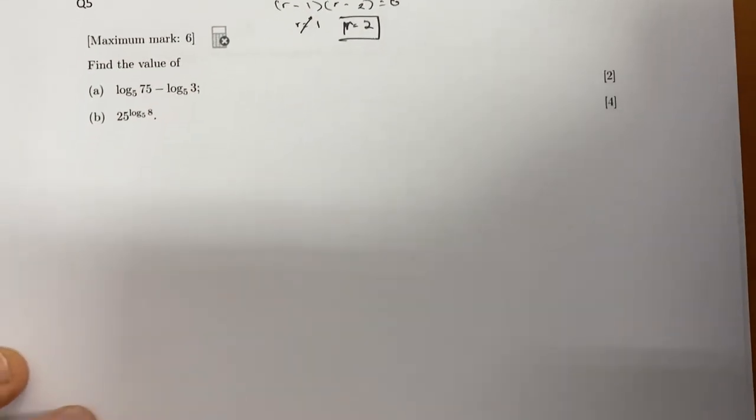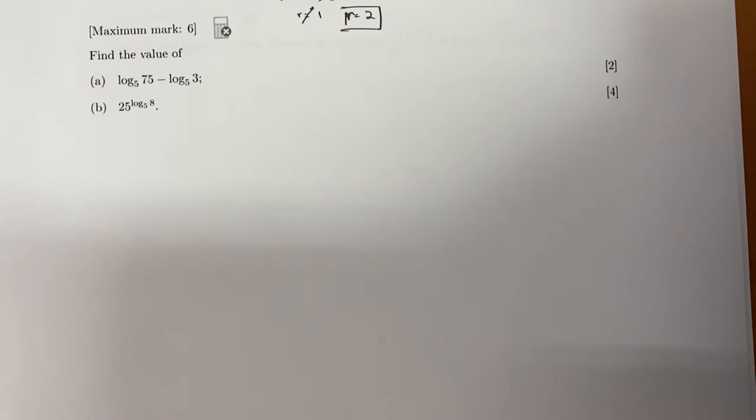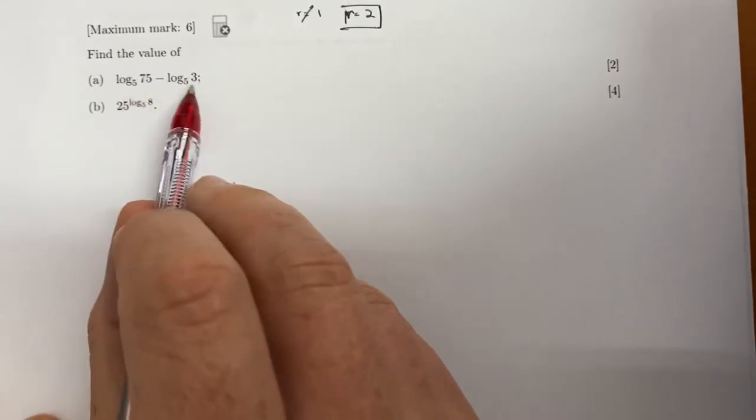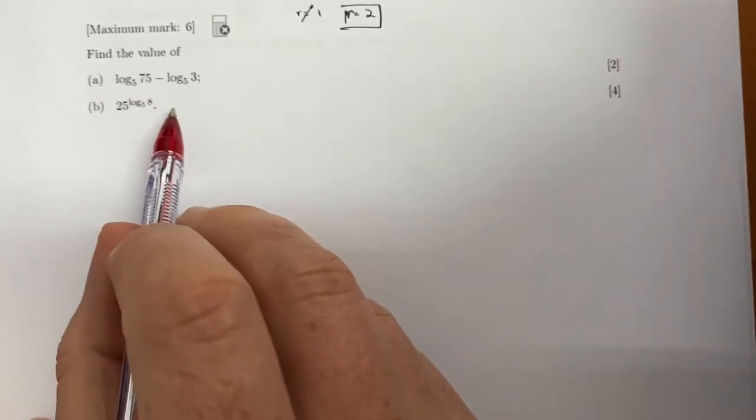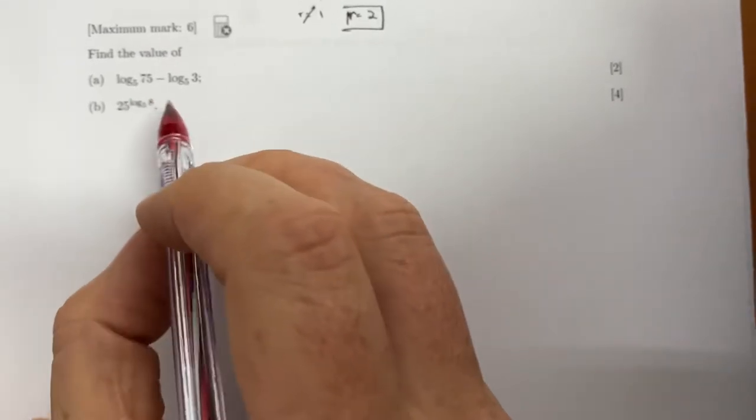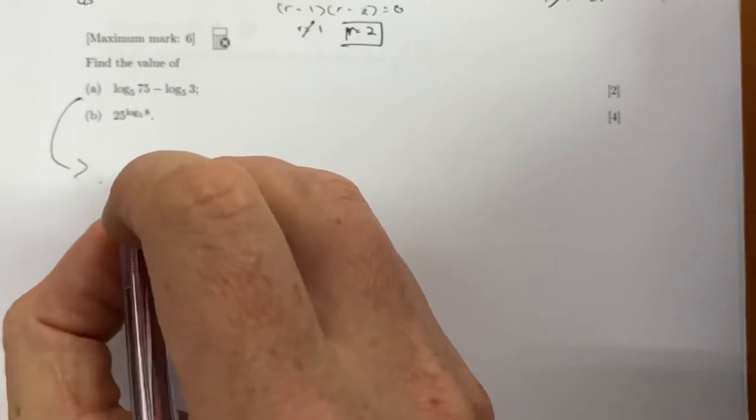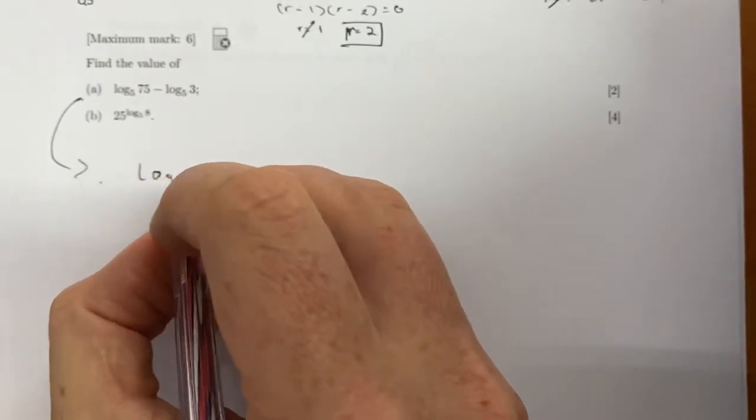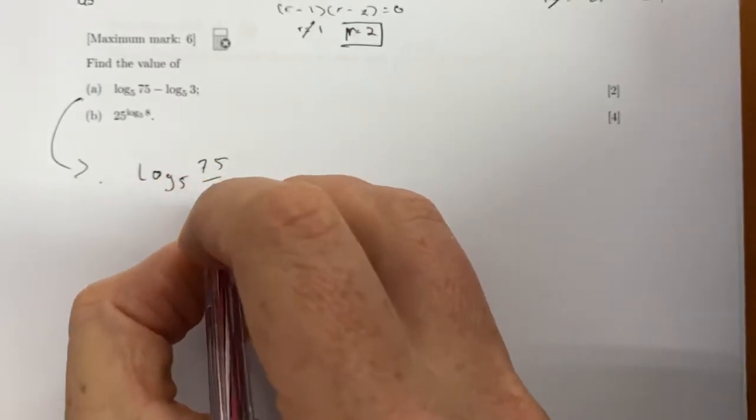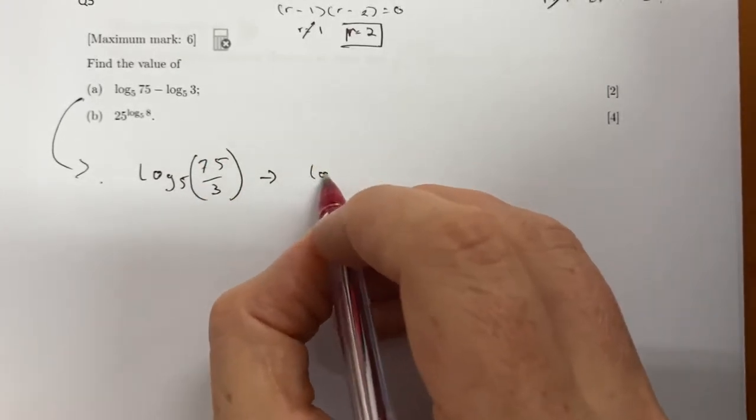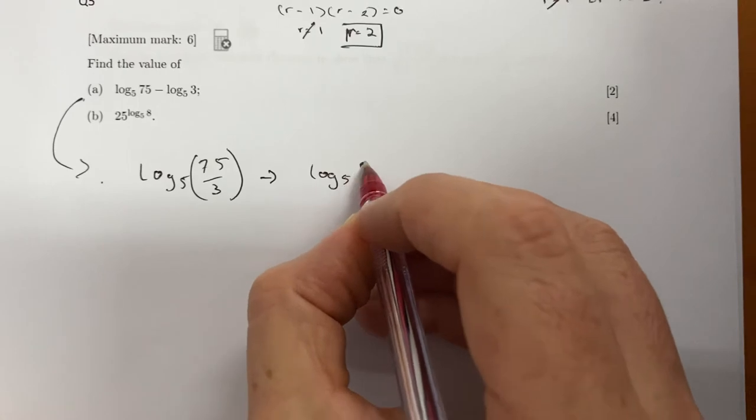Okay, question 5 is a logarithms question. This is subtraction of logs, so we're going to use the property of logs. Subtraction becomes division, so we can say that's log₅(75/3), and that turns into log₅(25).